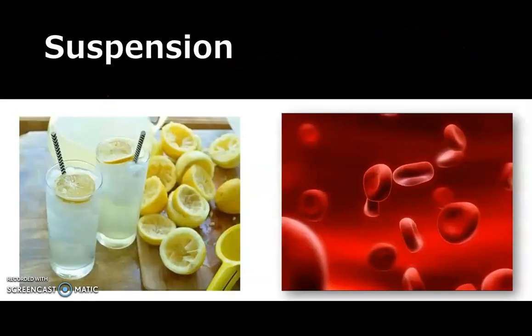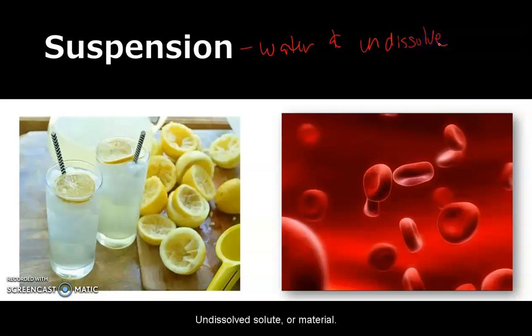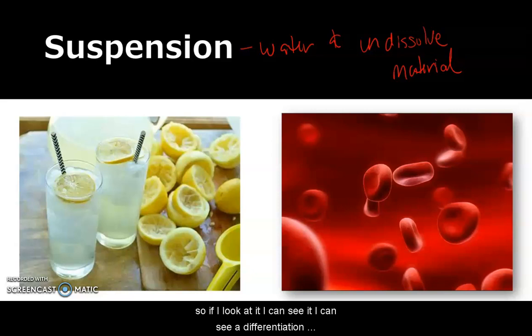The other type of mixture is a suspension. And this is when you can actually see the stuff. So a suspension would be water and an undissolved material. This is water in an undissolved material. So if I look at it, I can see it. I can see a differentiation between this stuff.